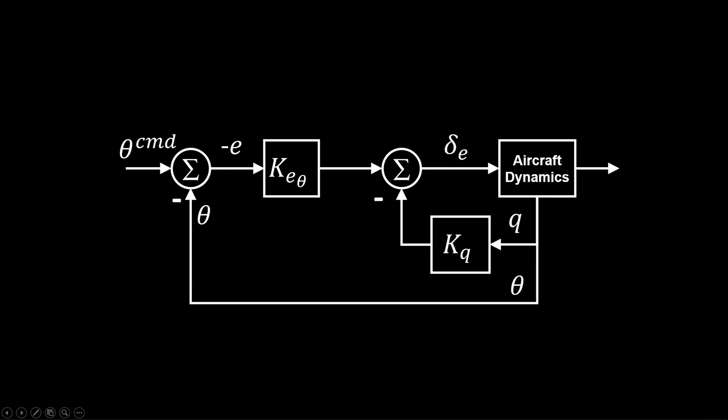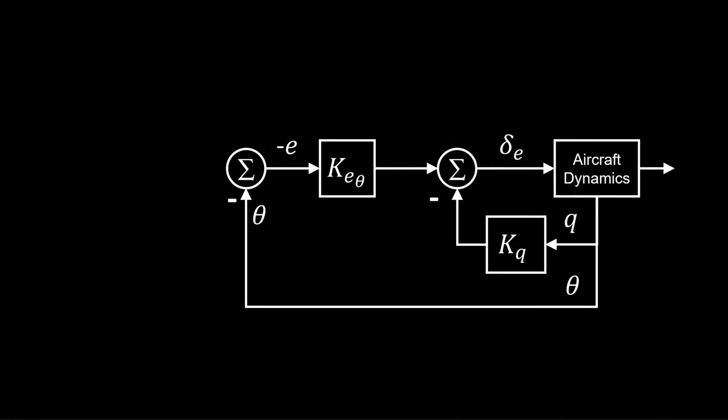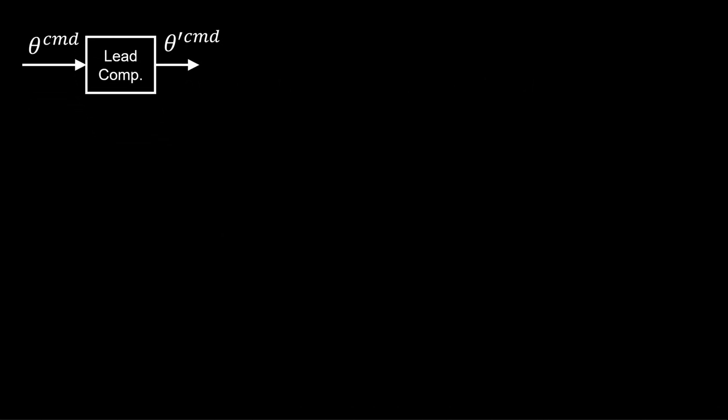Taking our pitch angle tracking controller, we insert a new transfer function in the command input channel. This transfer function is a lead compensator, and as the name suggests, it advances the phase of the pitch angle command to compensate for the slow, closed loop response.